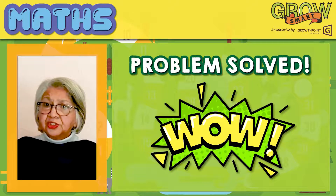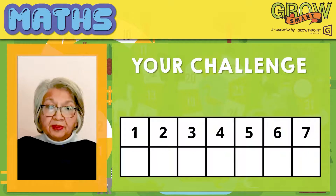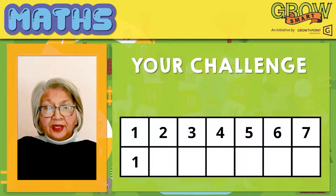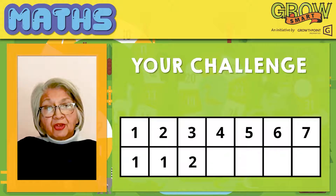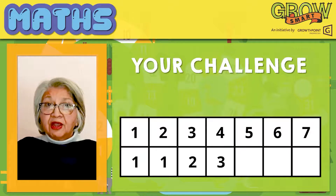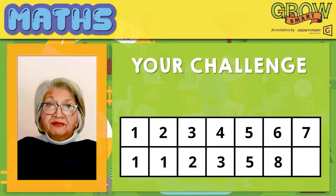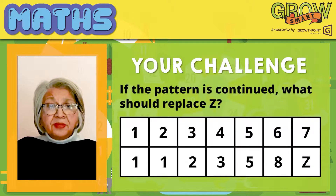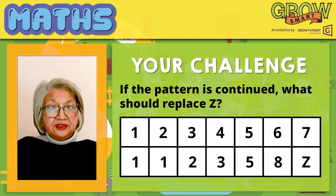Are you ready for the next challenge? Grab your thinking hats. In column 1 we have 1, in column 2 we have 1, in column 3 we have 2, in column 4 we have 3, in column 5 we have 5, in column 6 we have 8, and in column 7 we have the letter Z. If the pattern is continued, what should replace Z?